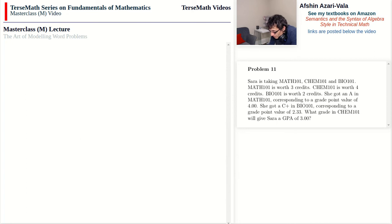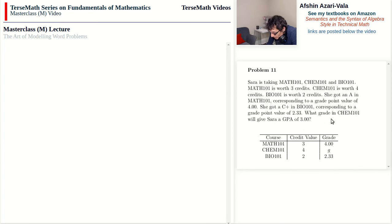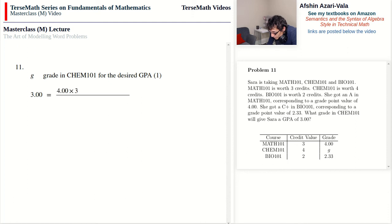Problem 11: Sarah is taking Math 101 (3 credits), Chem 101 (4 credits), and Bio 101 (2 credits). She got an A in Math (4.00) and a C-plus in Bio (2.33). What grade G in Chem 101 will give Sarah a GPA of 3.00? With G being the grade in Chem: 3.00 = (4.00 × 3 + G × 4 + 2.33 × 2) ÷ (3 + 4 + 2).